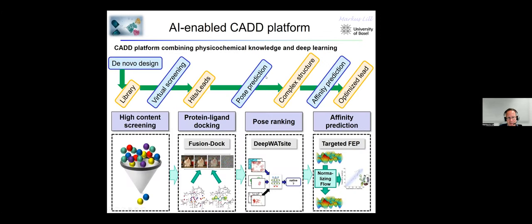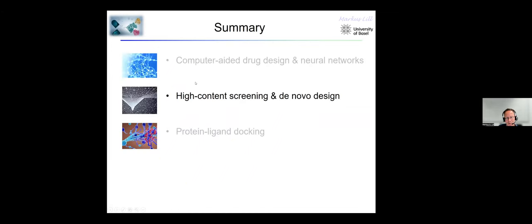We use these different techniques to build a completely new computer-aided drug discovery platform, again combining physical-chemical knowledge with deep learning. This network goes through the whole stage of drug design — generating de novo compound libraries, running virtual screening to find initial hit compounds binding to the target protein, post-ranking to get the protein-ligand complex structure, and affinity prediction to get an optimized lead. Today I will focus on the first part of this pipeline.